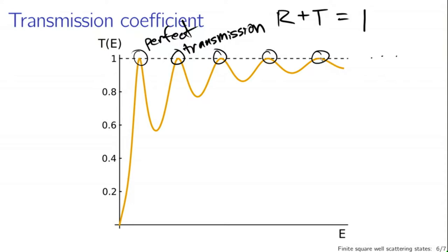Our transmission coefficient has some interesting properties, and you can think of this as analogous to anti-reflection coating in optics. If you have a lens and don't want any reflections, you can think of putting a coating on the lens that results in perfect transmission for the particular energies — the particular wavelengths of light — that you're interested in. All of this came as a result of looking at the general solutions to the Schrödinger equation, applying boundary conditions to mesh those solutions together, and then manipulating those boundary conditions.